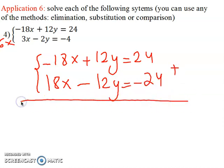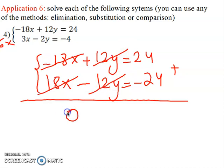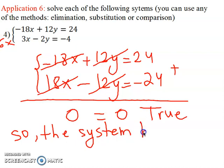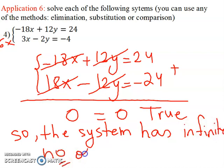Adding the two equations: minus 18x plus 18x equals zero; plus 12y minus 12y equals zero; and plus 24 minus 24 equals zero. So we get zero equal zero. This result is true. Since the result is true, the system has an infinite number of solutions.